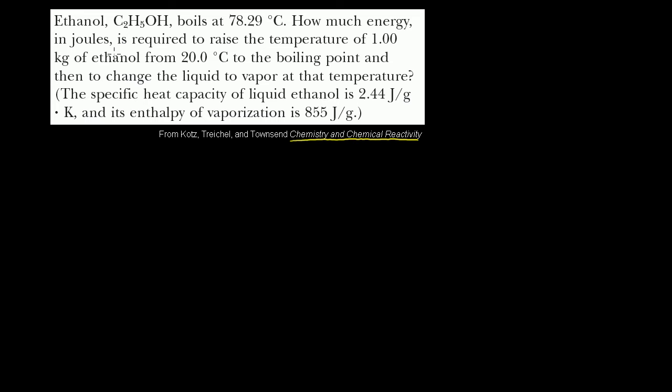So they tell us that ethanol, C2H5OH, boils at 78.29 degrees Celsius. How much energy in joules is required to raise the temperature of 1 kilogram of ethanol from 20 degrees Celsius to the boiling point, and then change the liquid to vapor at that temperature?